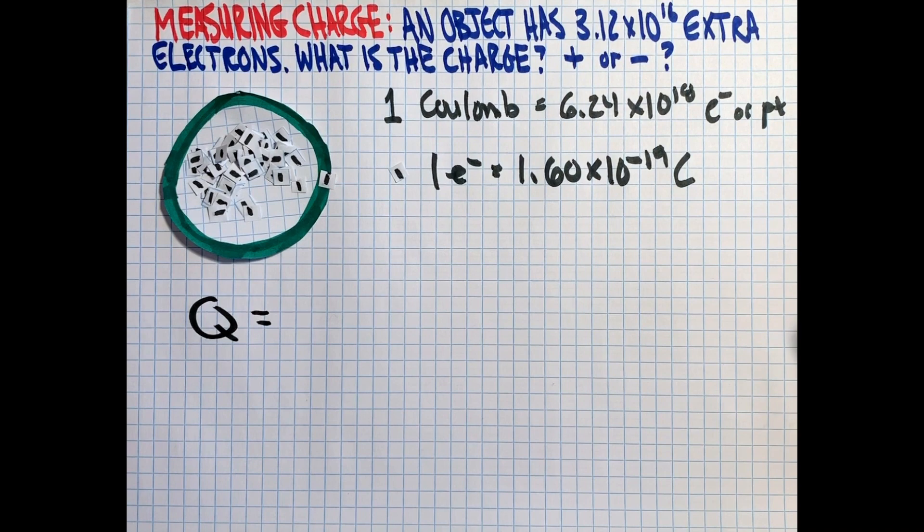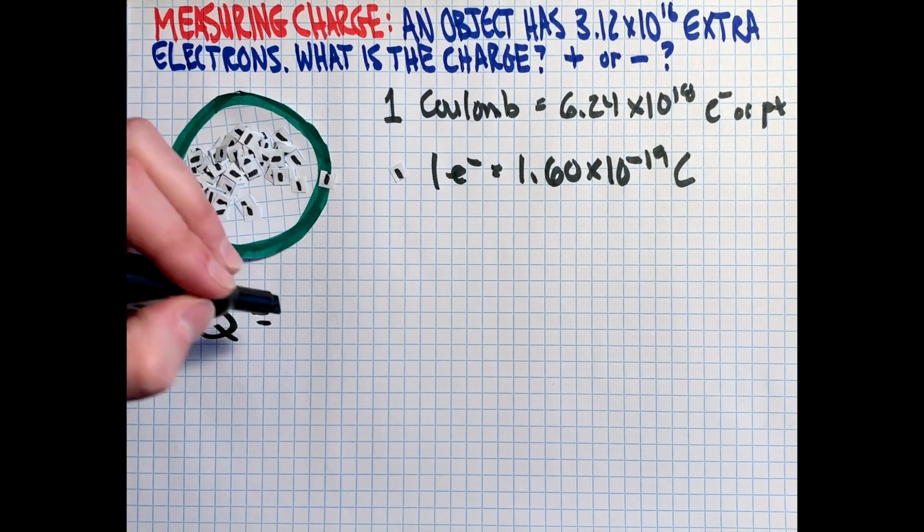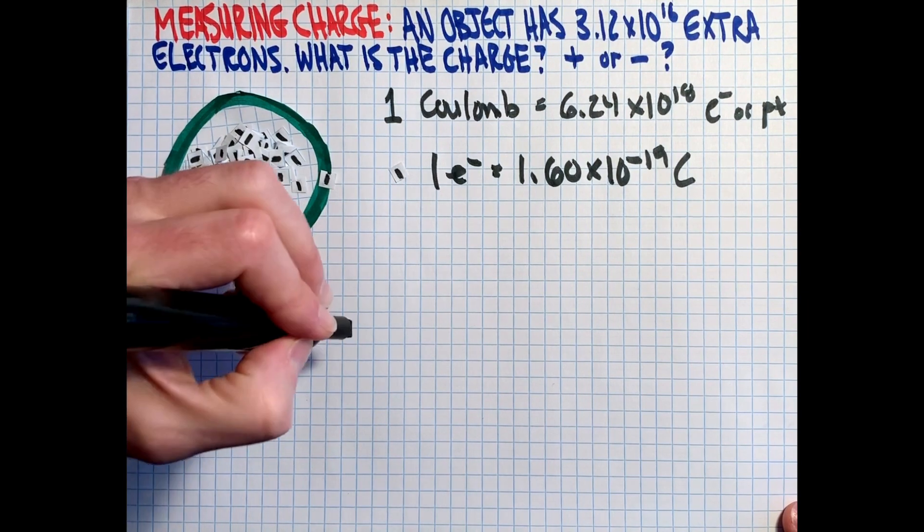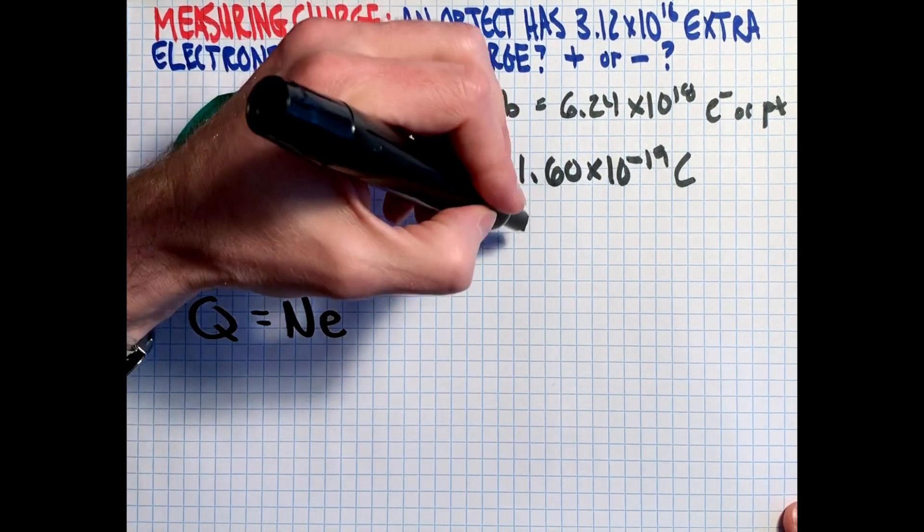And I will use interchangeably big Q and small Q. I'm not sure why we can do that, but that seems to be the convention. And we can take our number of charged particles and times it by what is called the elementary charge, which is really this.